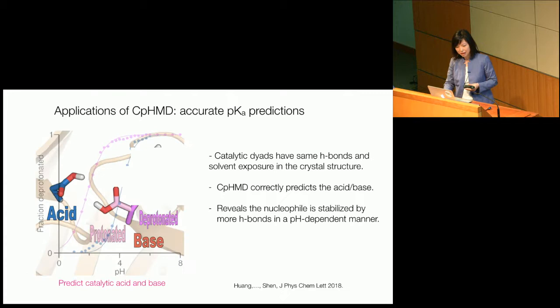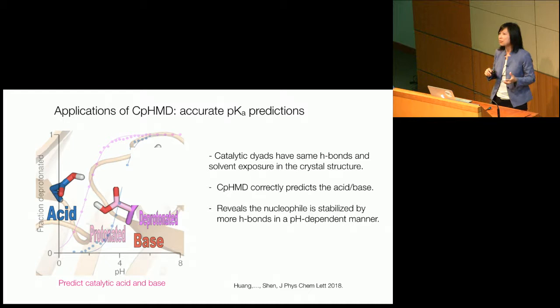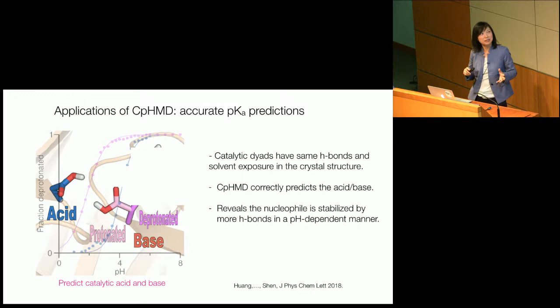So currently, continuous constant pH MD has been validated in many, many systems. The most recent example shows how useful it is to get very accurate and site-specific pK values. This is a very well-known problem in enzymology: proteins that perform function via acid-base catalysis. We have two acidic residues — one acts as the base, the other acts as the acid.